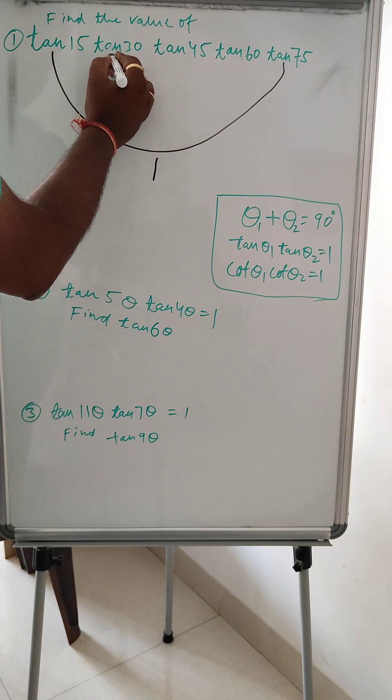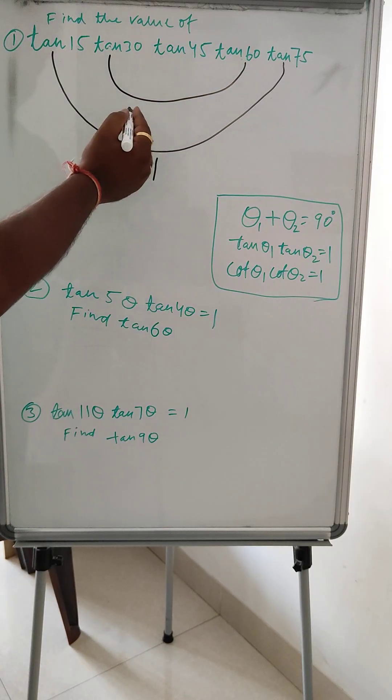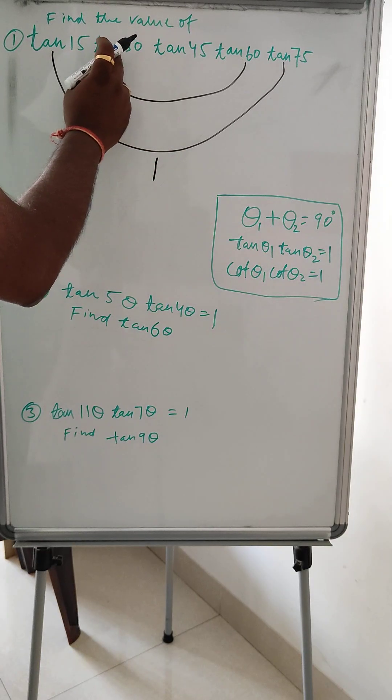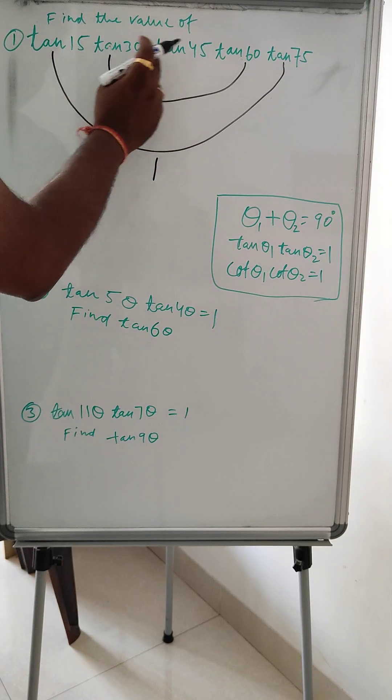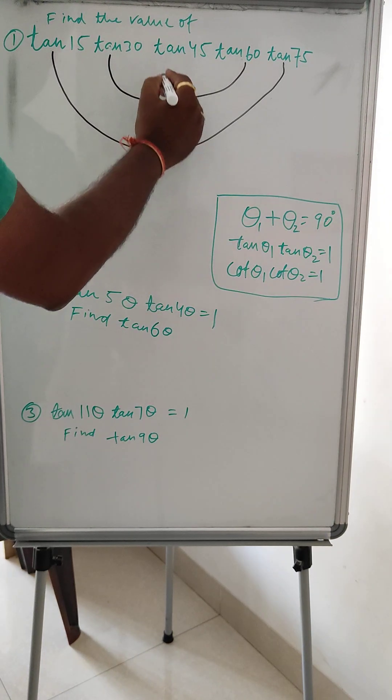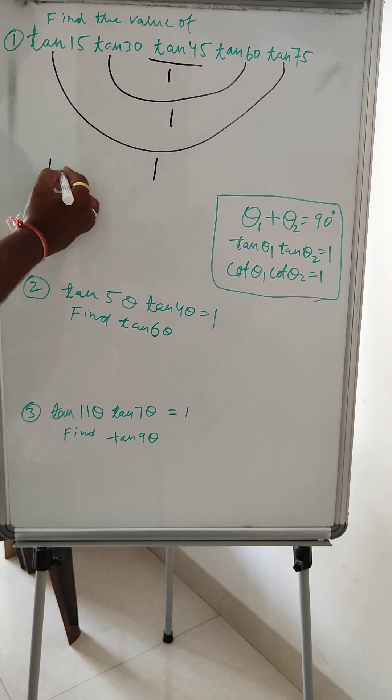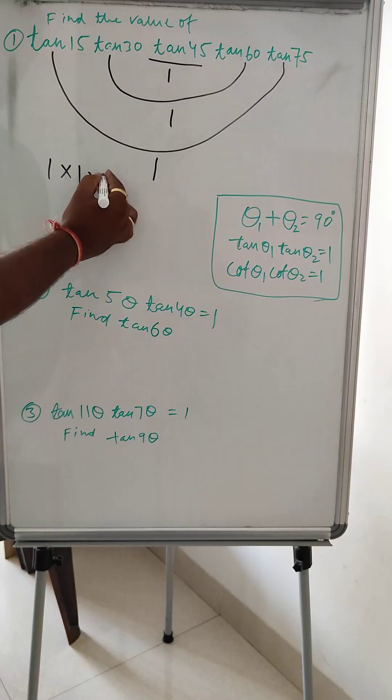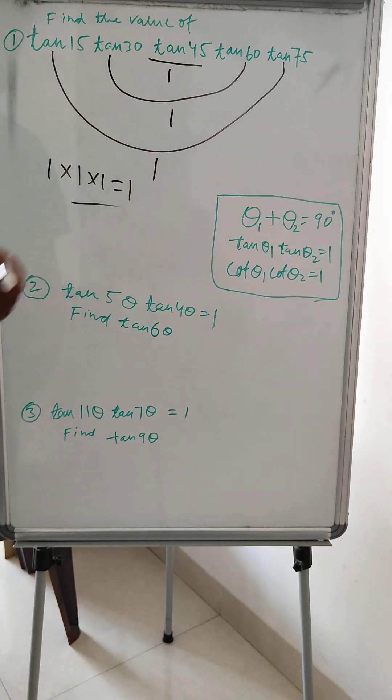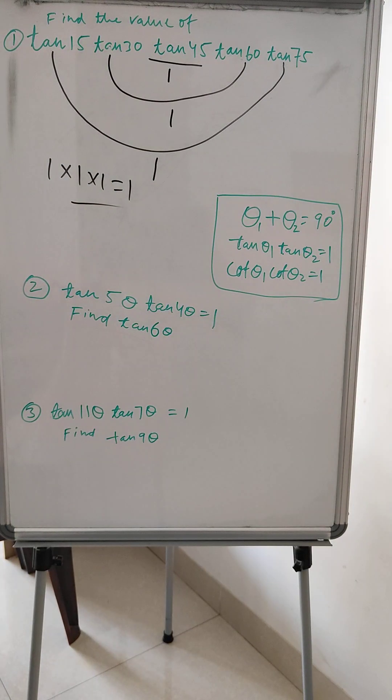And tan 60° and tan 30°—tan 30° × tan 60° will also be 1, because 30 plus 60 is 90. And tan 45° itself is 1. So 1 × 1 × 1 × 1 is 1 only. The value of this big equation is 1 only.